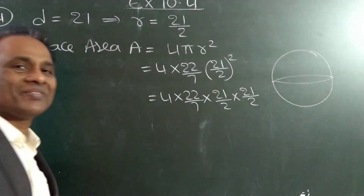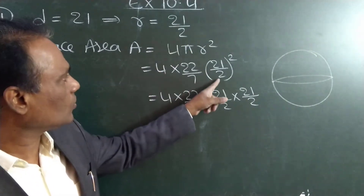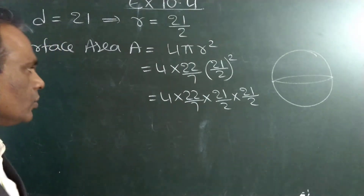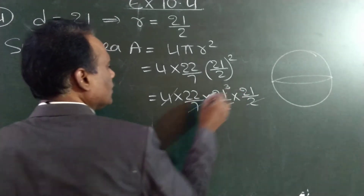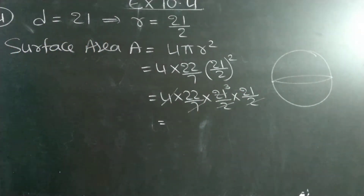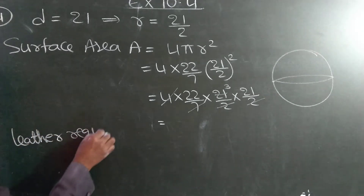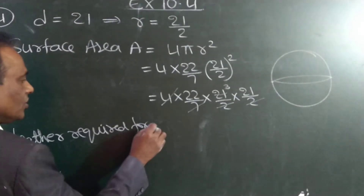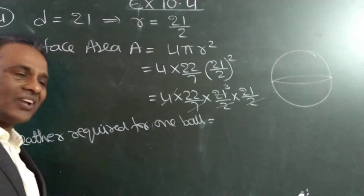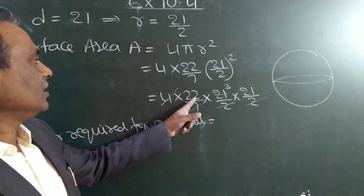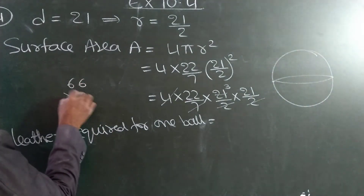Square means two times. So 4 × (22/7) × (21/2) × (21/2). The 4 in the numerator and 2 × 2 = 4 in the denominator cancel. The 7 in the denominator and 21 = 7 × 3 in the numerator — 7 cancels, leaving 3. So we get 22 × 3 = 66, then 66 × 21 = 1386. Leather required for one ball is 1386.